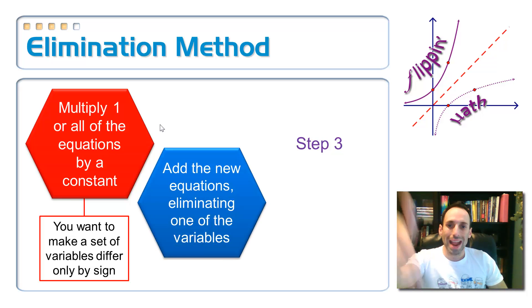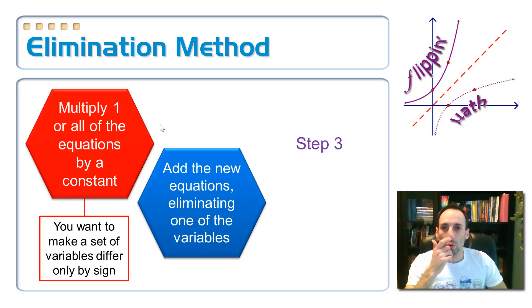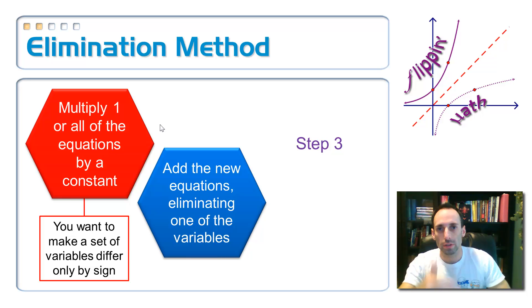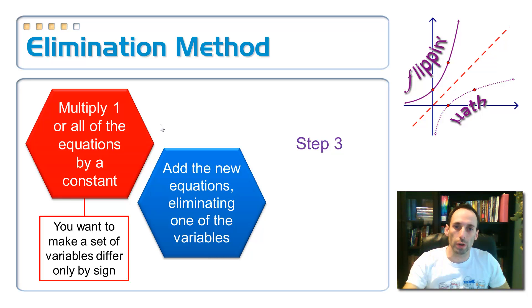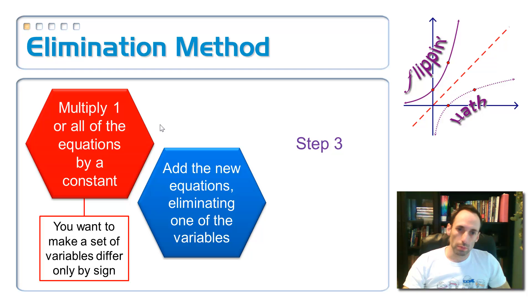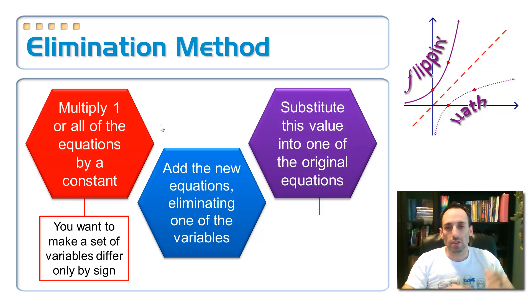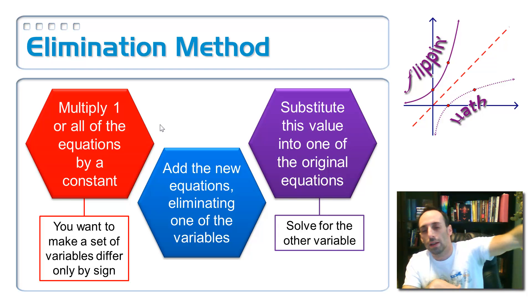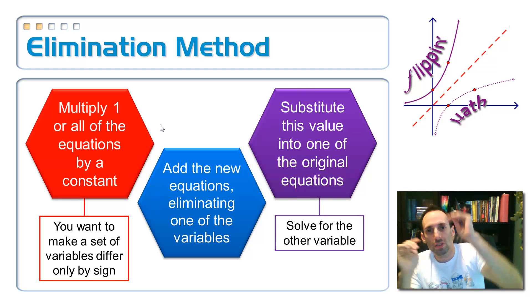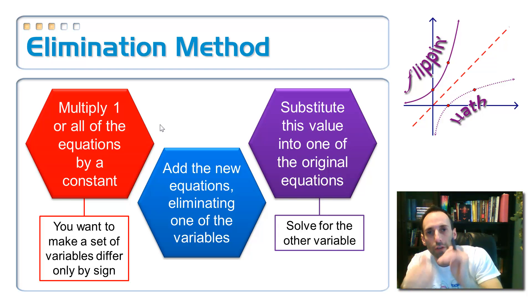Then just add those two new equations. The ones that are opposite are going to eliminate — they're going to disappear — and you're left with one variable. Finally, take that value from step 2 and substitute it back into one of the original equations to solve for the final variable.